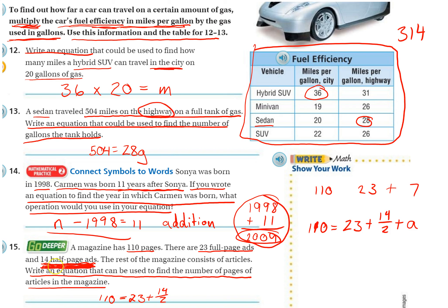110 equals 23 plus 14 over 2, and the reason I'm using 14 over 2 is because it's 14 half-page ads. So that would be 7 total pages once we did the math, but they don't want us to do the math just yet. Plus, the rest is going to be articles. We don't know, but we could figure it out. In fact, there's going to be 80 articles if you did the math.